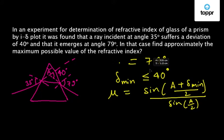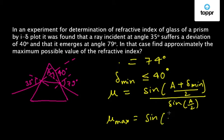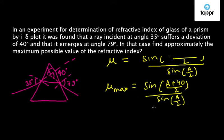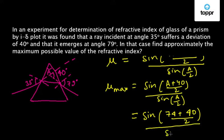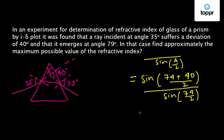The maximum value of refractive index will be when delta minimum is maximum. That is, mu max will be equal to sine of A plus 40 by 2, by sine of A by 2, because 40 is the maximum value of delta minimum. If we substitute the value of A in this relation, we will get sine of 74 plus 40 by 2, by sine of 74 by 2, which is equal to sine of 57 degrees by sine of 37 degrees.